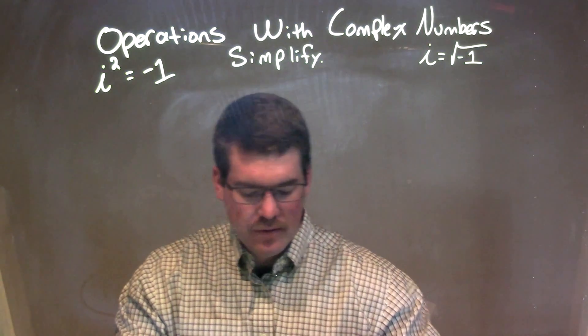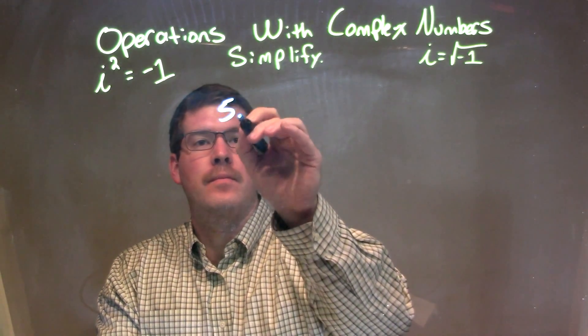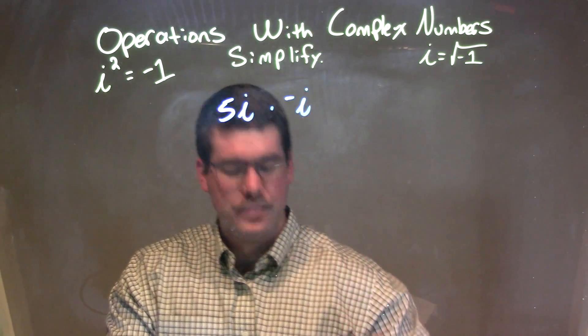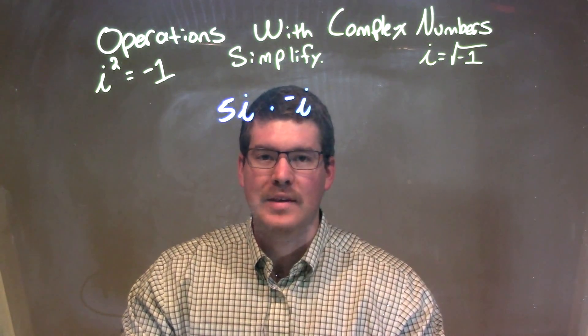So if I was given this: 5i times negative i, well, we have 5i times negative i.